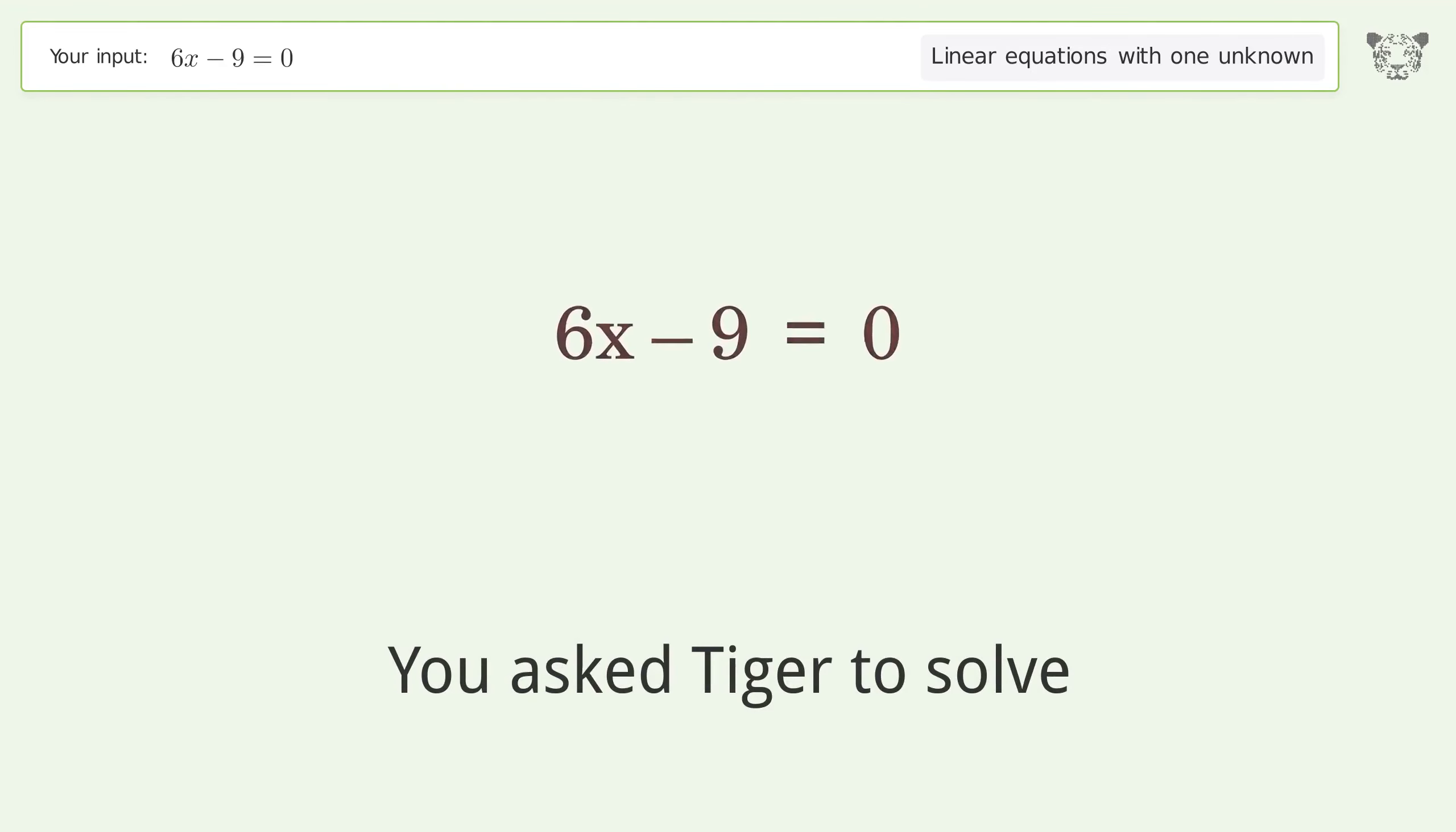You asked Tiger to solve. This deals with linear equations with one unknown. The final result is x equals 3 over 2.